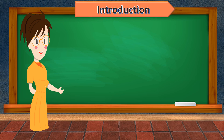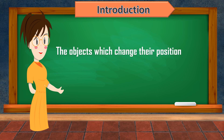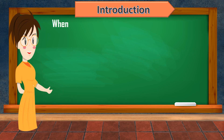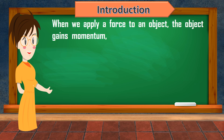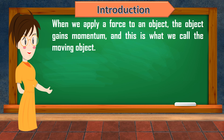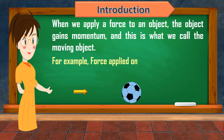In the motion and types of motion video, we saw that objects that change their position are called moving objects. But how do objects move? Do you know how things get into motion? When we apply a force to an object, the object gains momentum, and this is what we call a moving object. For example, the force applied to the ball helps it to move in a forward direction.